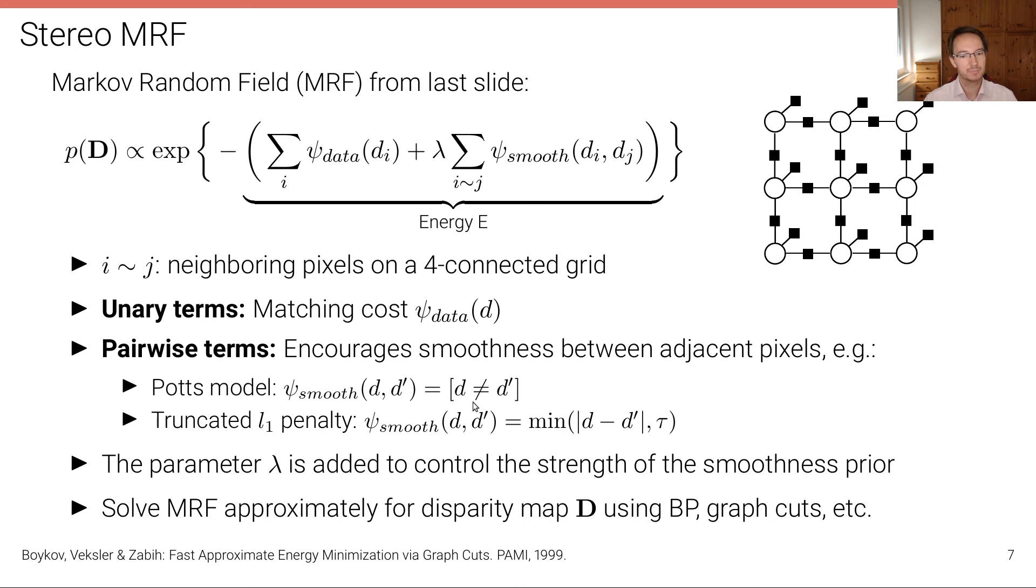For example, we have a very simple term here that simply says, well, if the disparity of adjacent sites or pixels is not the same, then I add a penalty, and if it's the same, I add zero, no penalty. But we can also model something like the truncated L1 penalty, which is L1 distance truncated with a truncation threshold that's coming much closer to the distributions that we've seen on the previous slide. And that basically says, well, up to a certain threshold, I want to penalize two adjacent sites if the disparity is different. And I want to penalize proportional to the difference in the disparity. And, of course, lower is better.